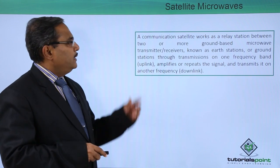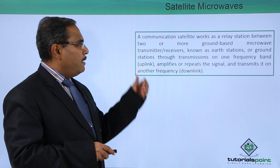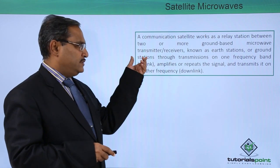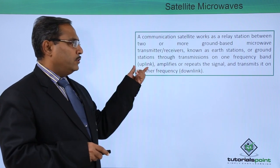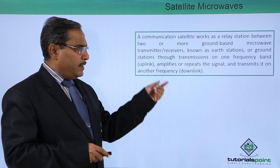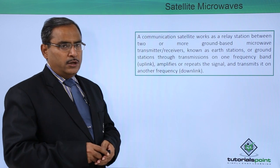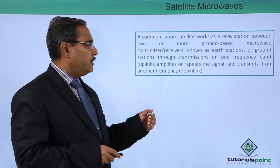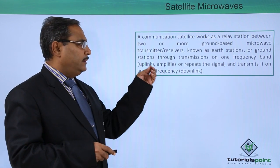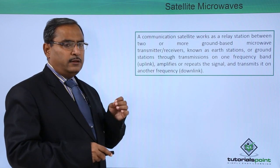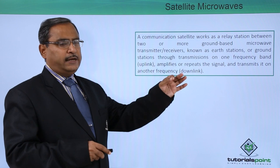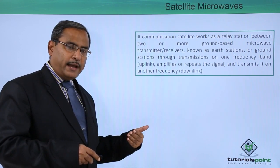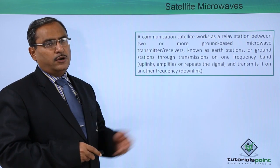Now for satellite microwaves: a communication satellite works as a relay station between two or more ground-based microwave transmitters or receivers, also known as ART stations or ground stations. It receives transmissions on one frequency band called the uplink, amplifies or repeats the signal, and transmits it on another frequency called the downlink. The signal travels from an ART station to the satellite on the uplink frequency, where it is amplified or repeated, and then returned to another ART station on the downlink frequency.